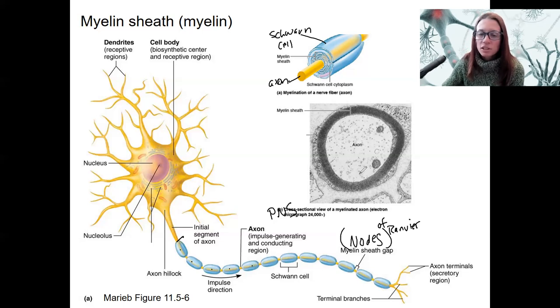This is what it looks like in an electron micrograph, so a real picture. Here's the axon of the neuron, and then the myelin sheath is like insulation.